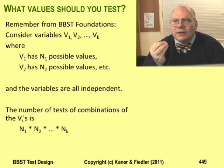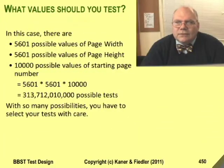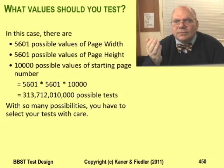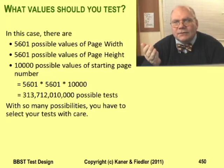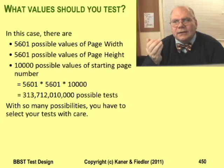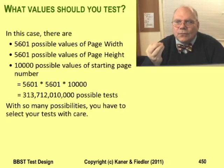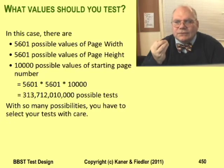Apply that to the page setup dialog. The Width field accepts values between 1 and 56 inches in increments of 0.01 inches — that yields 5,601 possible widths. The Height field accepts the same sizes: 5,601 possible heights. The starting page number can take any value from 0 to 9,999 — that's 10,000 possible tests. Together, there are 5,601 times 5,601 times 10,000 possible tests. That's over 300 billion tests just for three simple little fields on a minor dialog box.